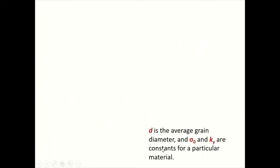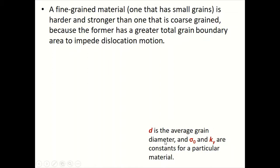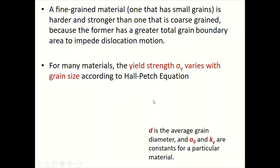For high angle grain boundaries, dislocations tend to pile up at the boundary rather than traverse it. This pile-up introduces stress concentration, generating new dislocations in adjacent grains. Therefore, a fine-grained material — one that has very small grains — is harder and stronger than a coarse-grained one, because the former has a greater total grain boundary area to impede dislocation motion.